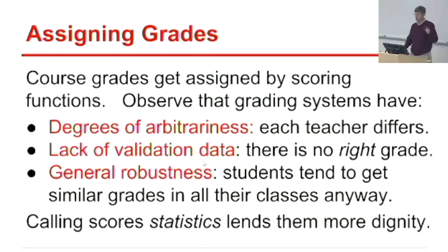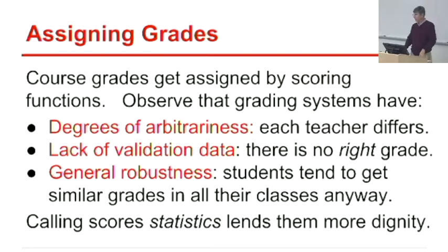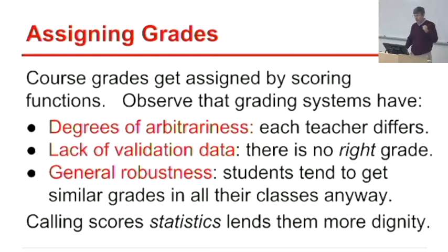First, it is a very arbitrary thing — every professor uses a different scoring function to weight their students, and every professor is certain they do it the right way. Second, there is generally no way to check whether we are doing it correctly. I've decided you are an 88.5 student in my class — but it's not clear there is a right answer here. There is no validation, no gold standard.